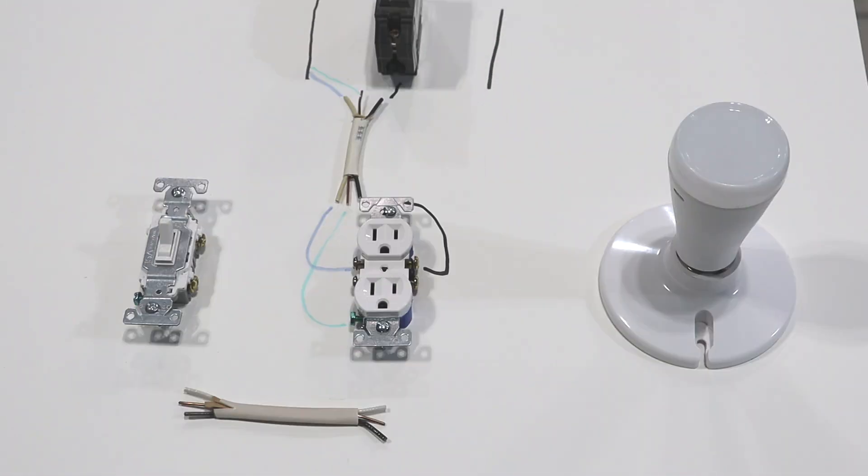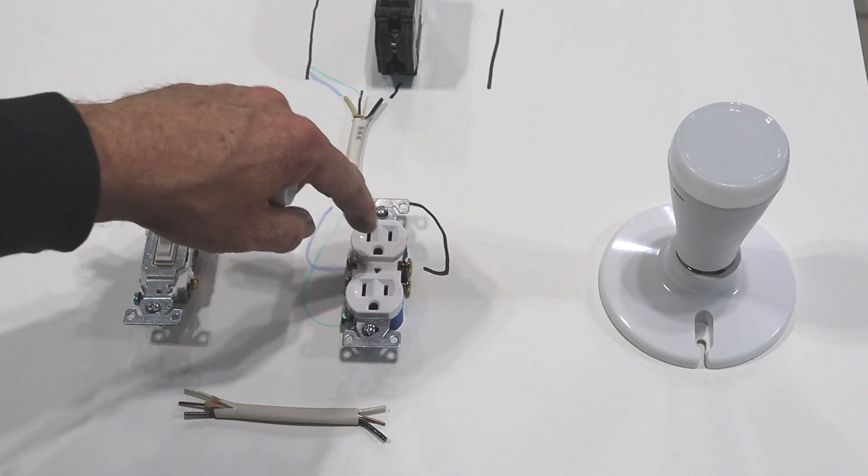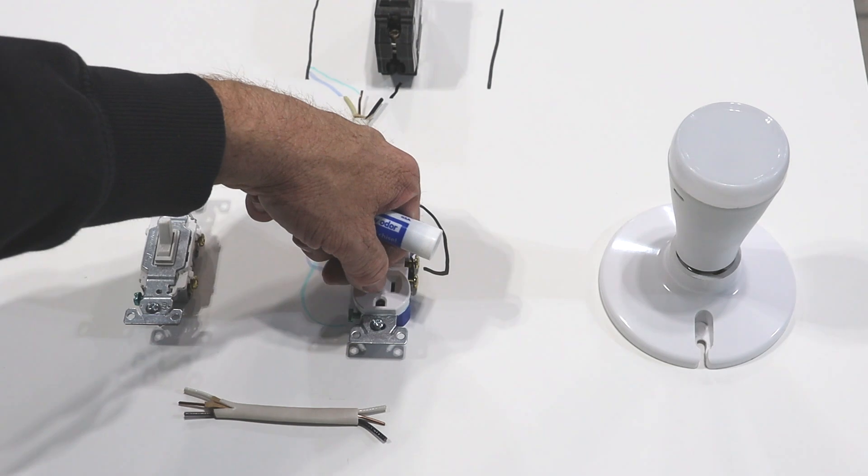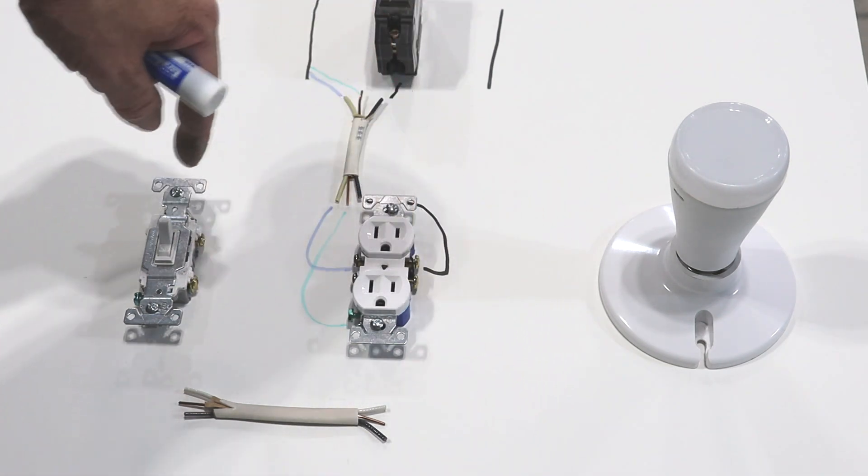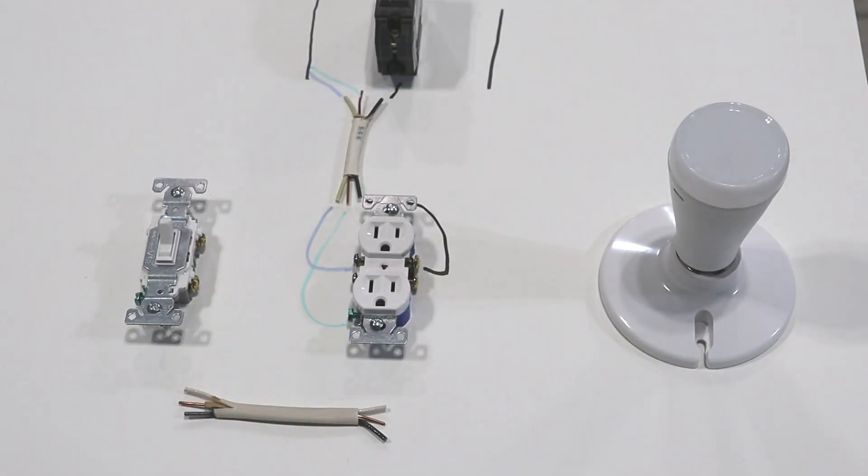But now we're going to get a little crazy here because we want this switch to power this port of the outlet. When we plug in this lamp we want to get power from this outlet here to the switch, back to this outlet, over to our light. So we'll do the easiest thing first.